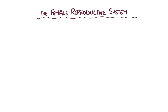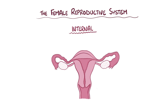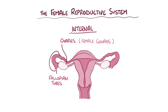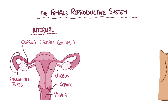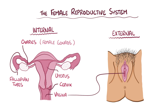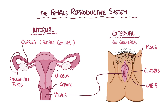The female reproductive system includes all of the internal and external organs that help with reproduction. The internal sex organs are the ovaries, which are the female gonads, the fallopian tubes, which are two muscular tubes that connect the ovaries to the uterus, and the uterus, which is a strong muscular sac that the fetus can develop in. The neck of the uterus is called the cervix and it protrudes into the vagina. At the opening of the vagina are the external sex organs, usually called the genitals, found in the vulva region. They include the labia, the clitoris, and the mons pubis.